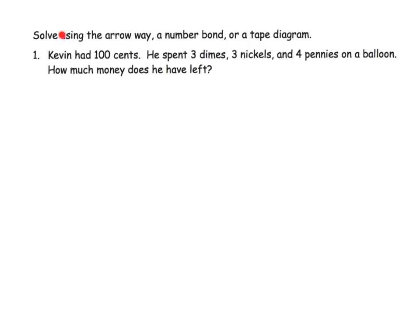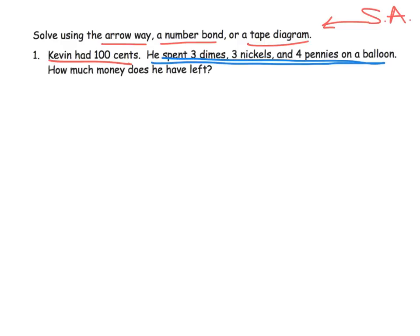The directions say for students to use the arrow method, the number bond, or a tape diagram. I'm going to throw in also the standard algorithm, which students have at their disposal at this point because they learned it back in Module 5. The problem says: Kevin had 100 cents, he spent some money — he spent three dimes, three nickels, and four pennies on a balloon. How much money does he have left?